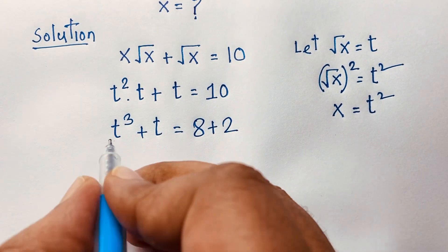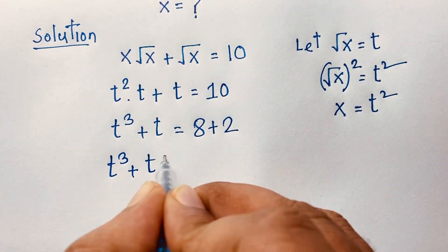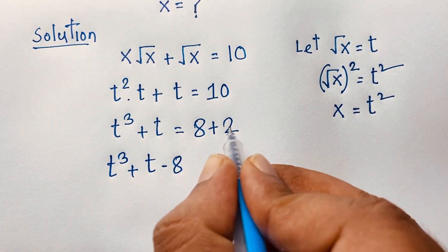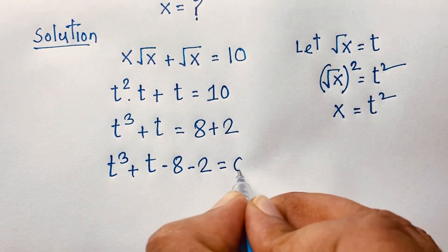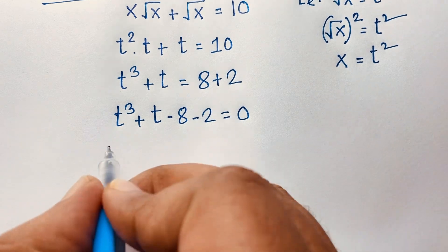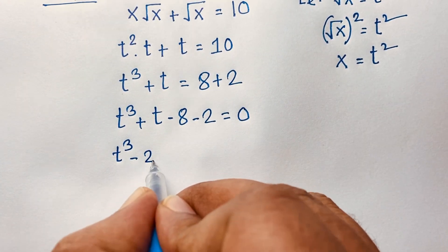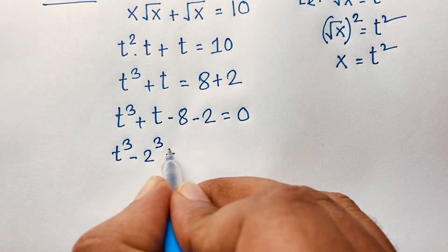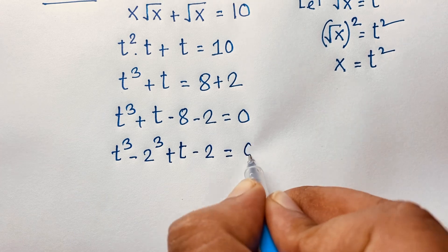The expression is t cubed plus t equals 8 plus 2. Moving 8 to the left gives negative 8, and moving 2 to the left gives negative 2, equal to 0. So we have t cubed minus 8 plus t minus 2 equals 0.